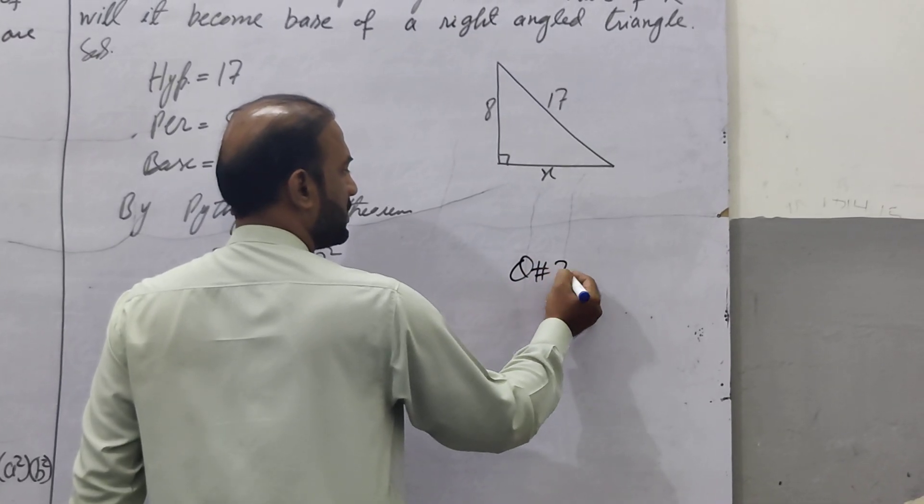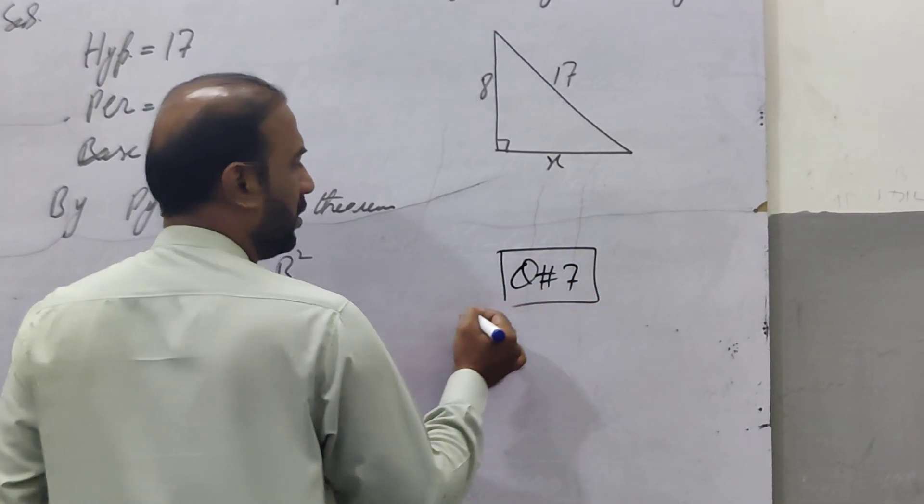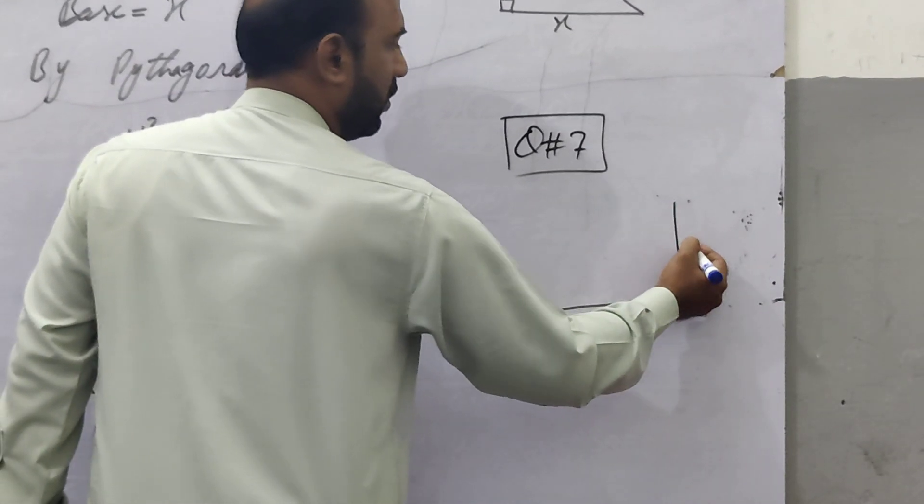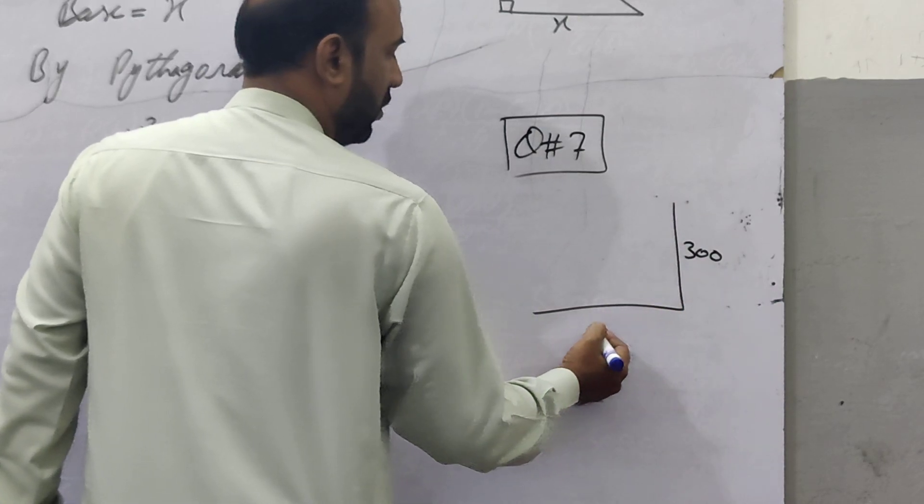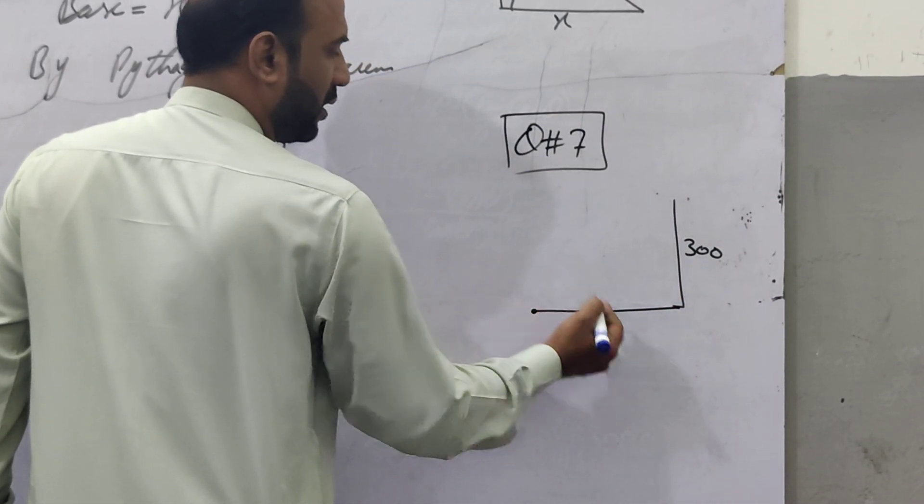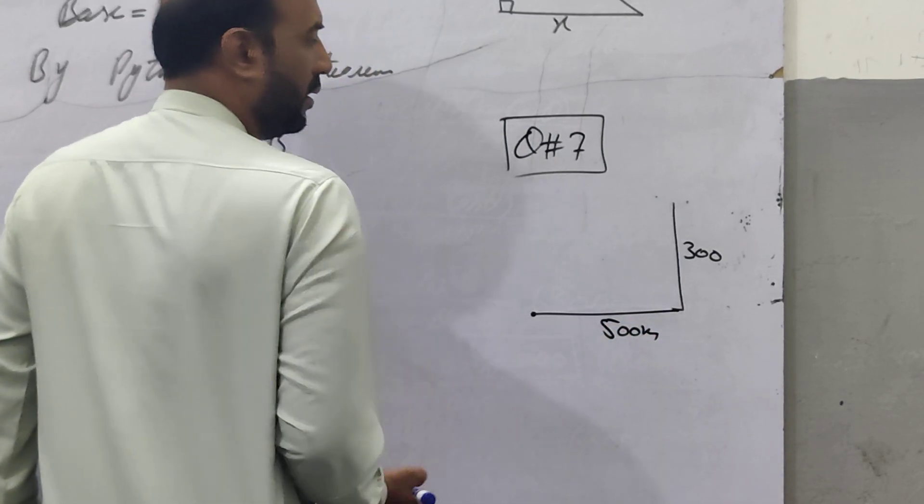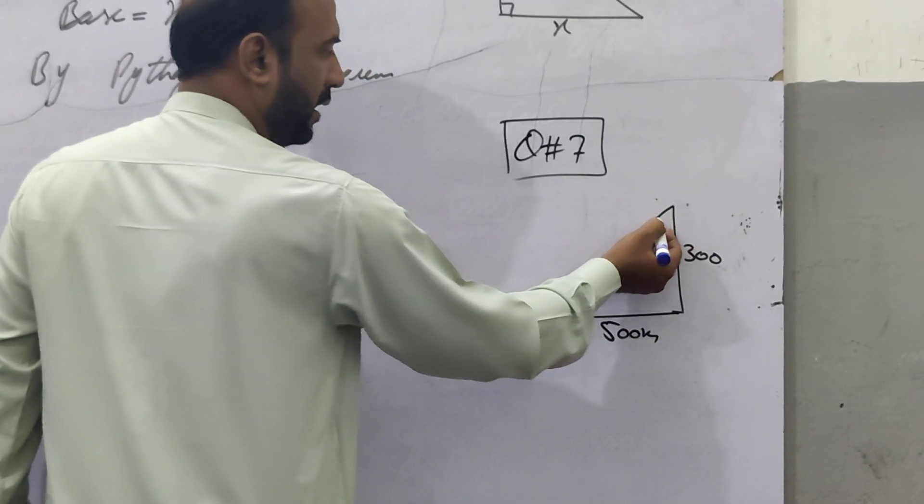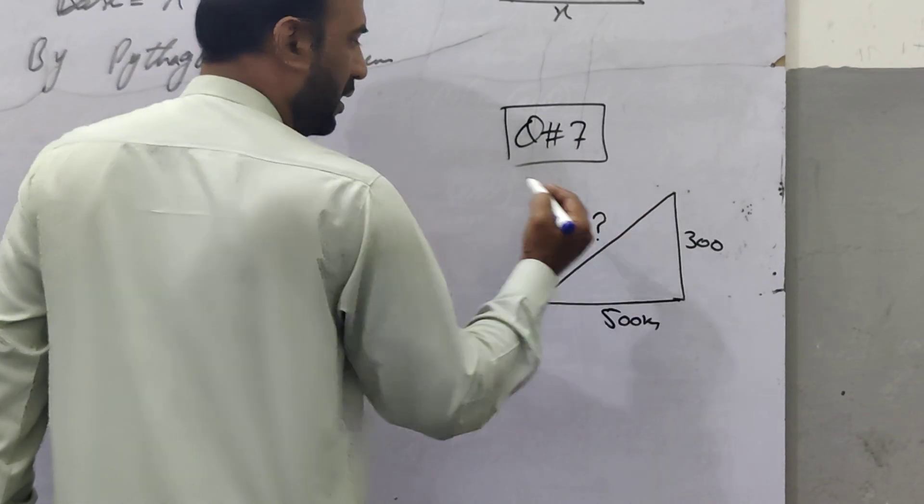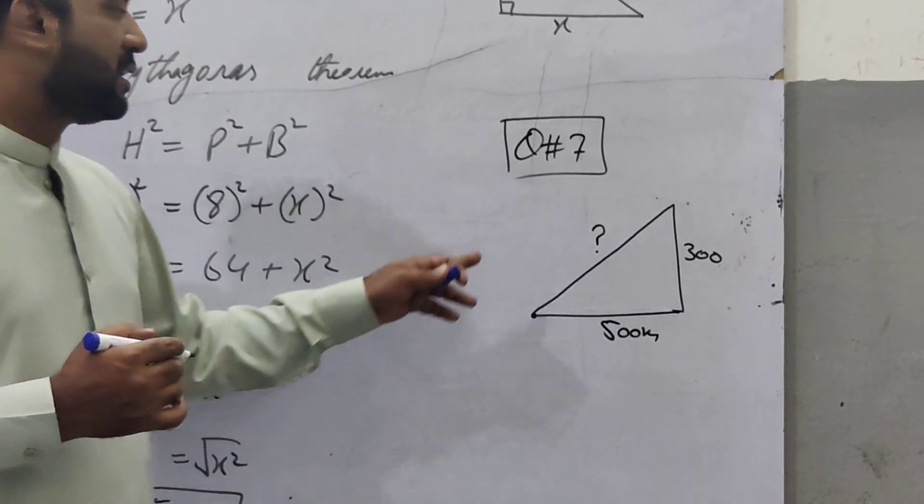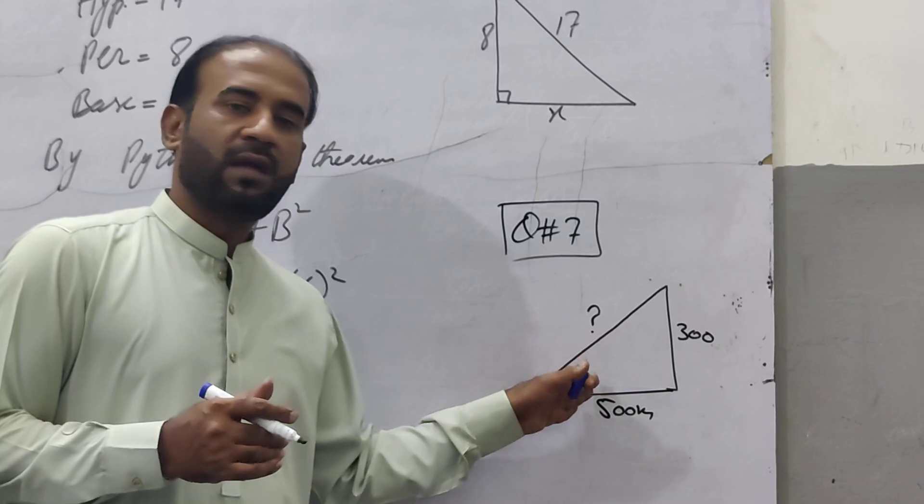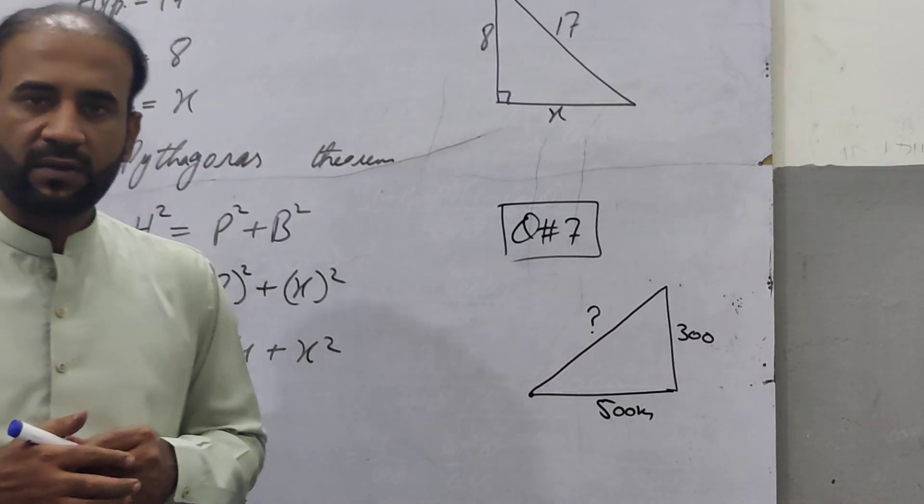Question number 7, I'm going to tell you the problem. There is an airplane 300 meters high, and this is a point at the airport 500 meters away. When the airplane is landing at the airport, how much distance will it travel? So you have to find the hypotenuse. This question you will do. You will try this question, okay?